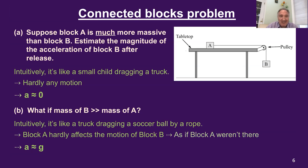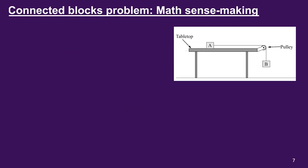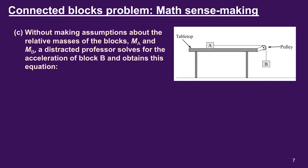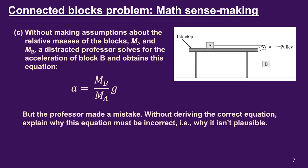So these are the conceptual reasoning questions that are going to set up the math sensemaking question. Here it is: without making assumptions about the relative masses of the two blocks MA and MB, a distracted professor solves for the acceleration of block B and gets this equation. The professor made a mistake — this equation is wrong. Without deriving the correct equation, explain how you know this equation must be incorrect — why it isn't plausible.